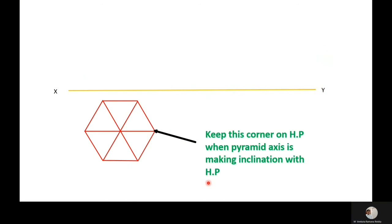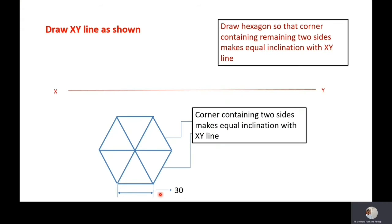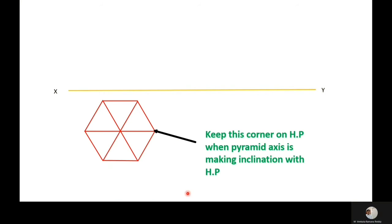The length of the base side is 30 mm. This corner is on HP when the pyramid axis is making inclination with the HP, so its image has to be in the reference line.